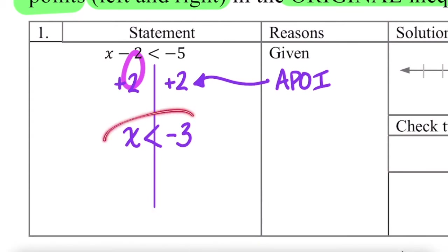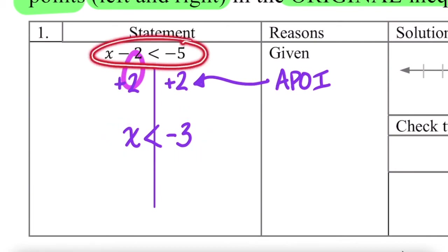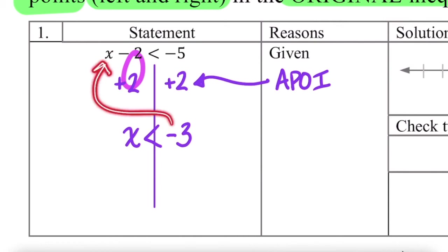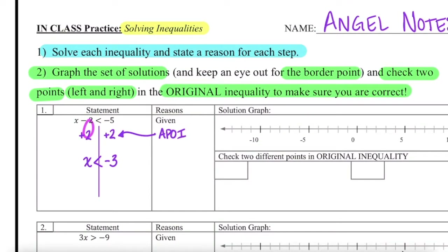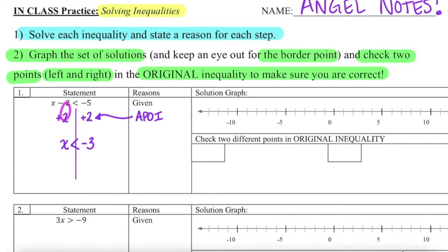So what does this statement actually mean? It means that for our original statement to be true, our solutions must be less than negative 3. Let's represent that on our solution graph. I'm going to start by identifying where negative 3 is on the number line, and since it's less than and not equal to, I'm going to use an open point, because negative 3 is not less than negative 3. All values to the left are indeed less than negative 3.